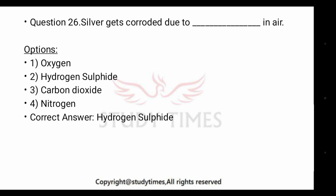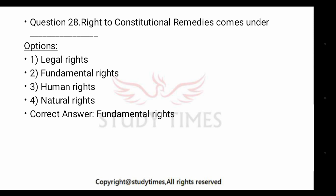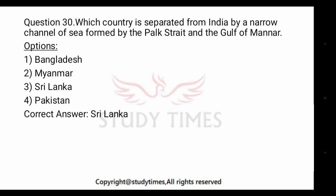Which of the following is a radioactive element? The answer is uranium. Right to constitutional remedies comes under dash — the answer is fundamental rights, because this is our fundamental right. Which of the digestive organs contains acid? The answer is the stomach.